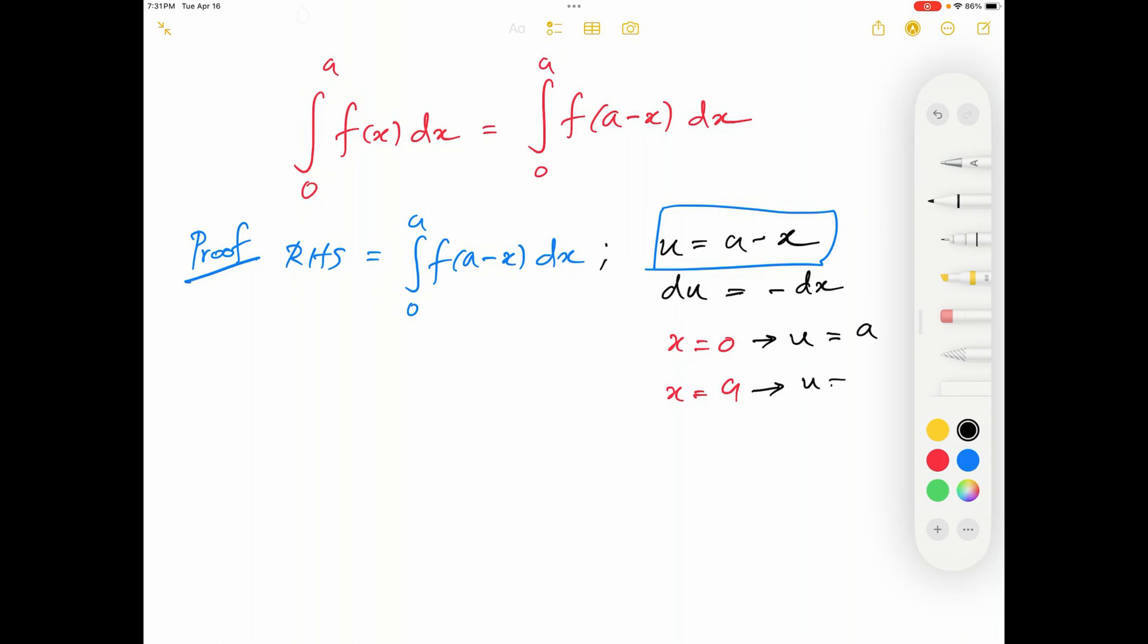When x is equal to a, according to our substitution, u should be equal to a minus a, which is 0.